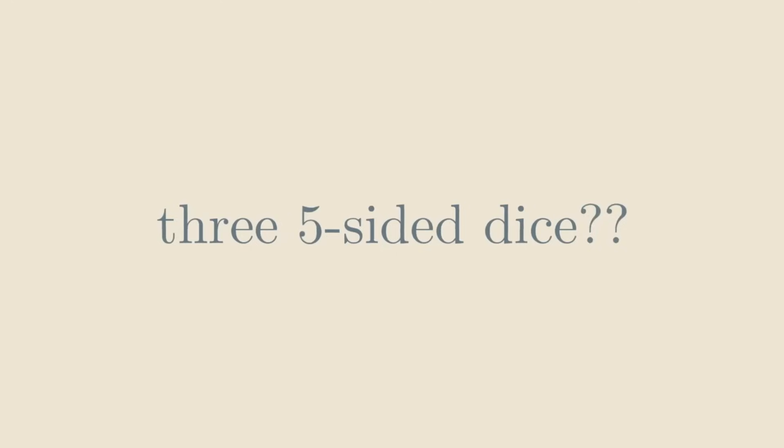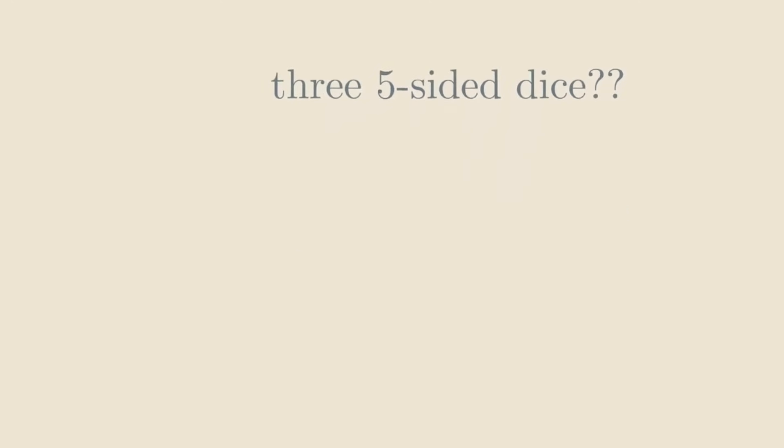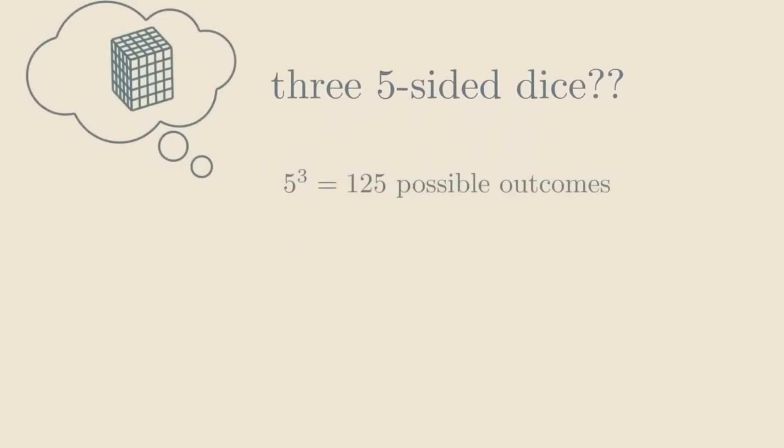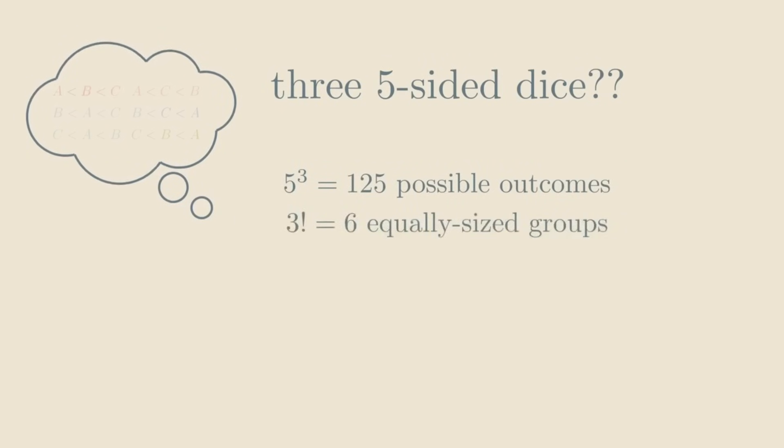Well, since we have 3 dice with 5 sides each, there are 5 cubed or 125 possible outcomes in total. We group these into 6 groups based on what ordering the result indicates. For the dice to be fair, we need each group to have the same number of outcomes, but this can never happen. We would need to have 125 over 6 outcomes in each group, but because 125 is not divisible by 6, this is not an integer.